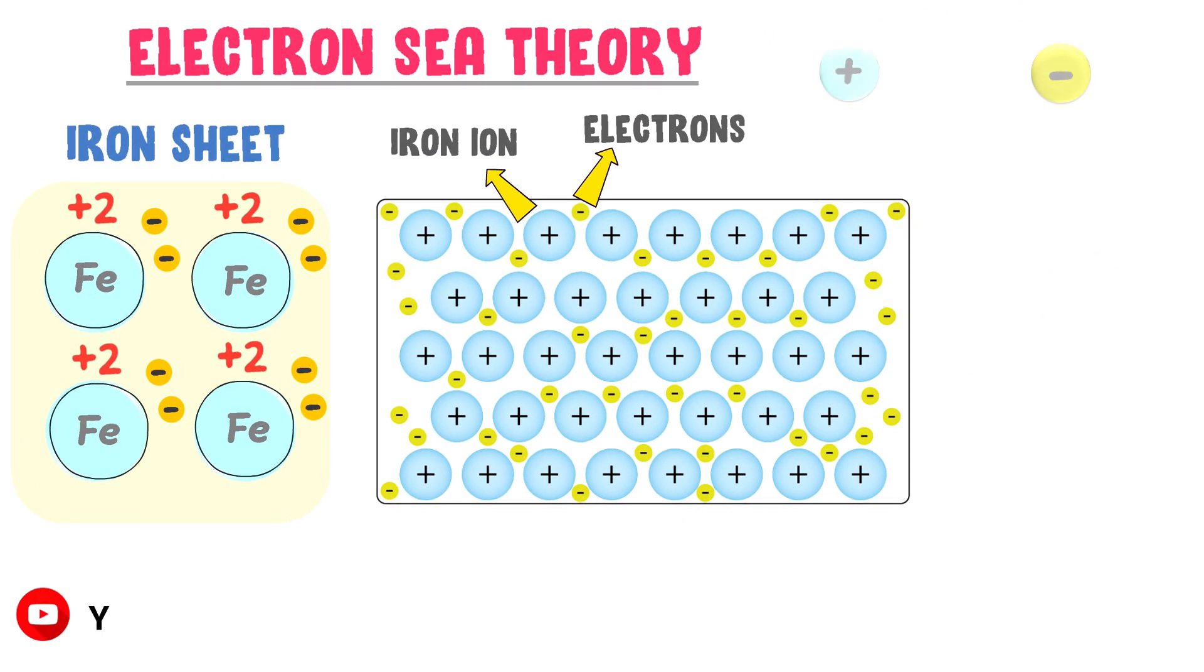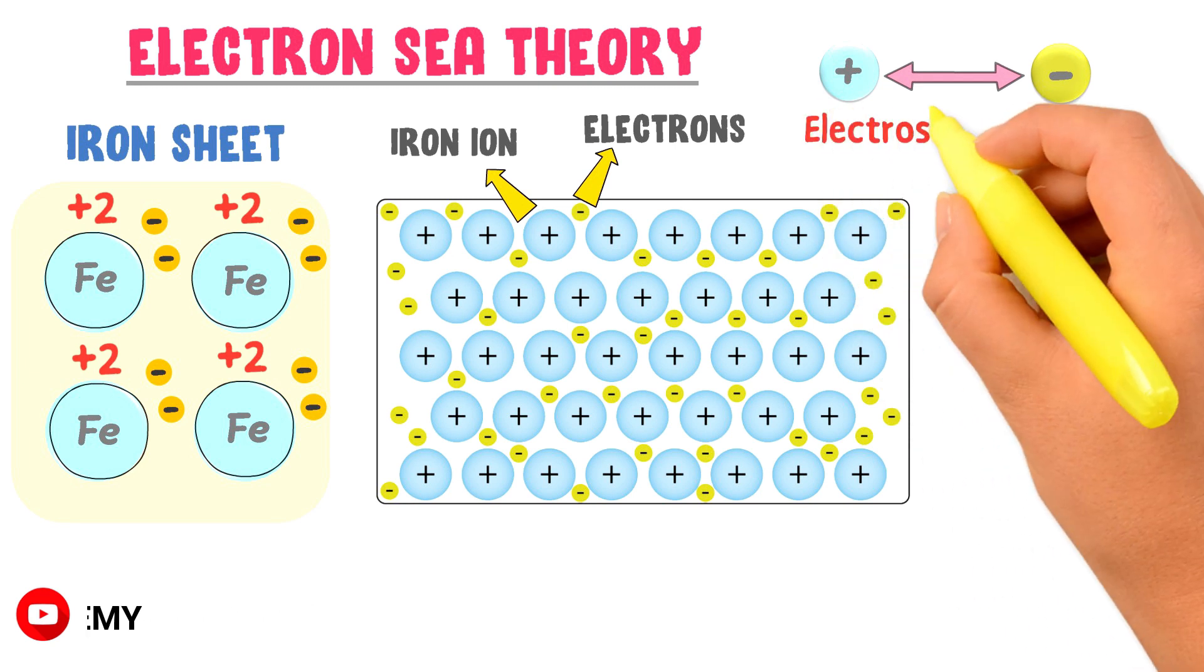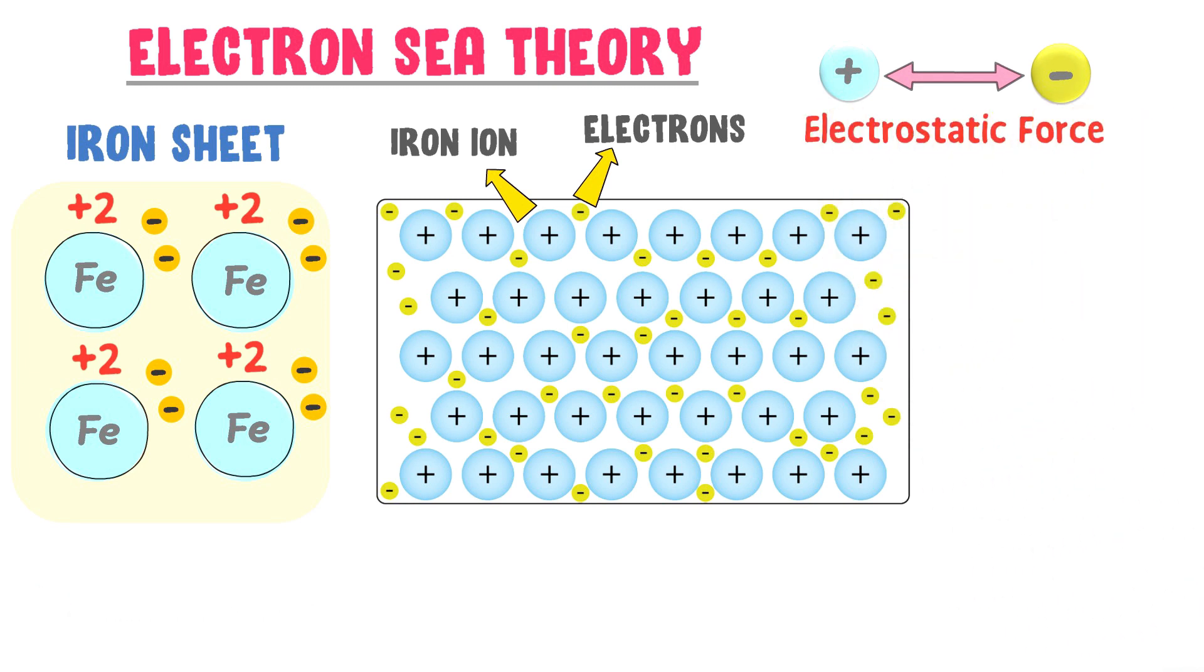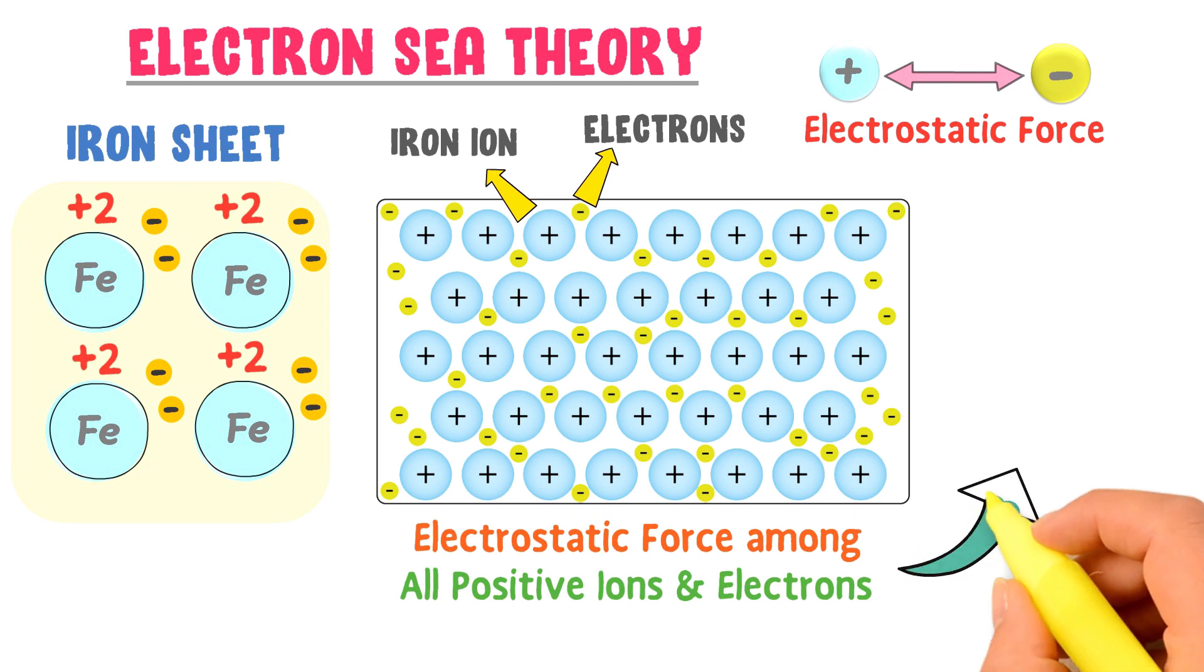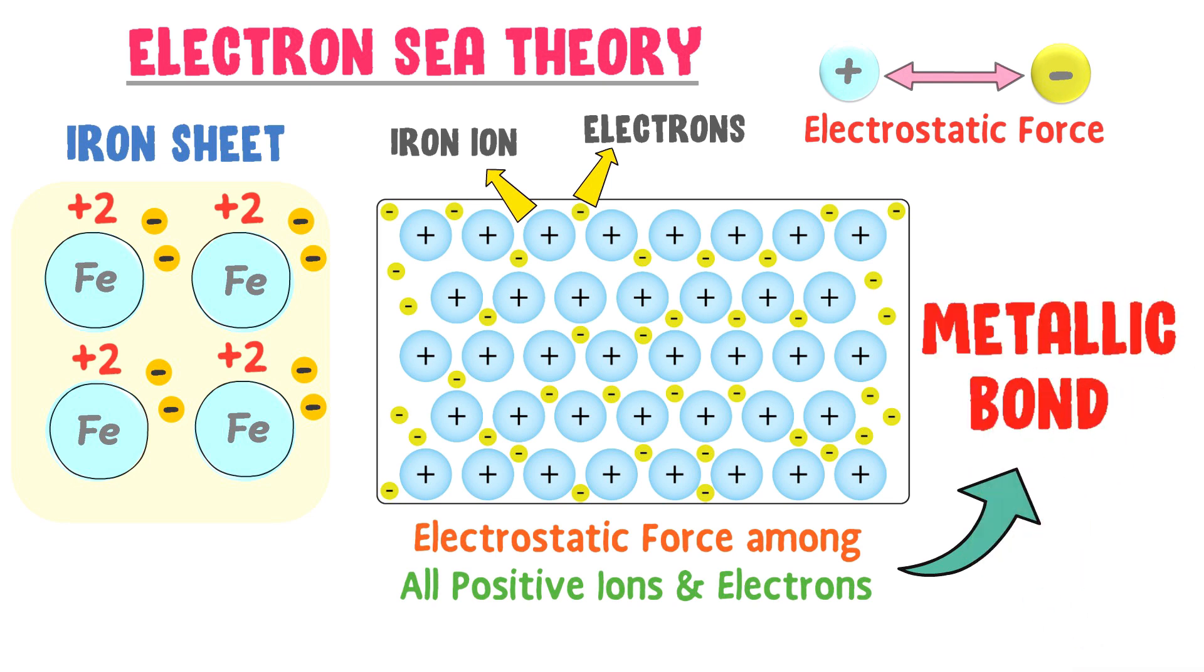We know that positive and negative charges attract each other due to electrostatic force. Hence, there is electrostatic force among all positive ions of iron and the sea of electrons. This electrostatic force acts as a metallic bond and holds together all the atoms of iron.